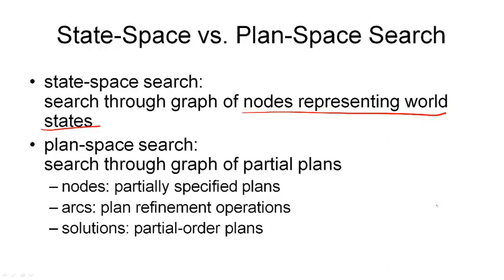This is not the case for plan space search, which is what we'll be looking at here. Here, we are searching through a graph of partial plans, as I've already mentioned. In this graph, the nodes are partially specified plans. So they're not complete plans that we can execute yet. And then we have arcs in our search space, and these are plan refinement operations. They tell us how we can move between partially specified plans, usually by refining them and adding more content to these plans.